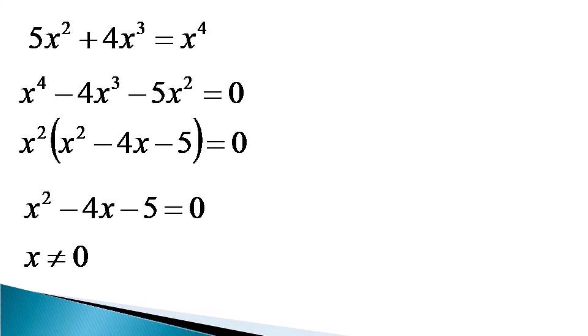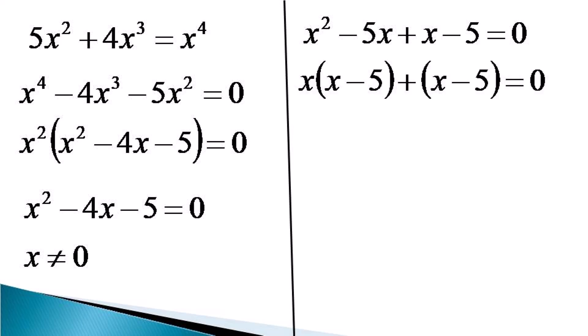We consider the other solution: x² - 4x - 5 = 0. This can be expressed as x² - 5x + x - 5 = 0, which is further factorized as x(x - 5) + (x - 5) = 0, or (x - 5)(x + 1) = 0.